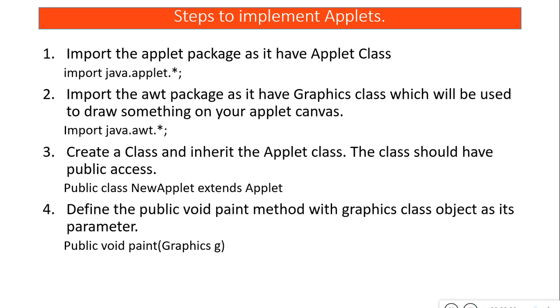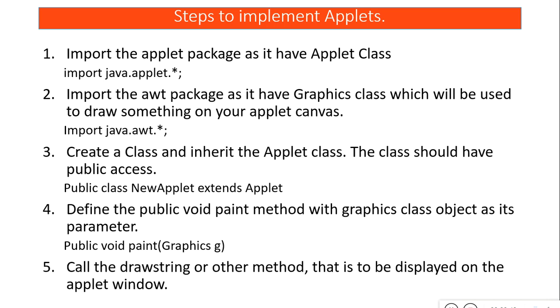Inside the public class you have to define a public paint method, and as a parameter you have to pass the Graphics class object. Then you can use the drawString method of the Graphics class to draw anything on your applet canvas.